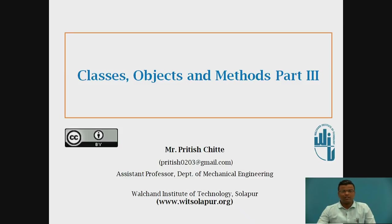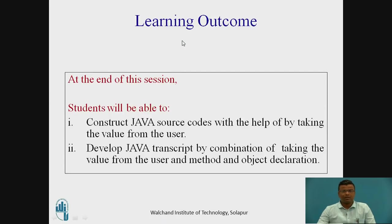Today we will discuss the third part of Classes, Objects and Methods. The learning outcomes are: the student will be able to construct Java source codes by taking the value from the user, and also the student will be able to develop a Java program by a combination of taking the value from the user and method and object declaration.